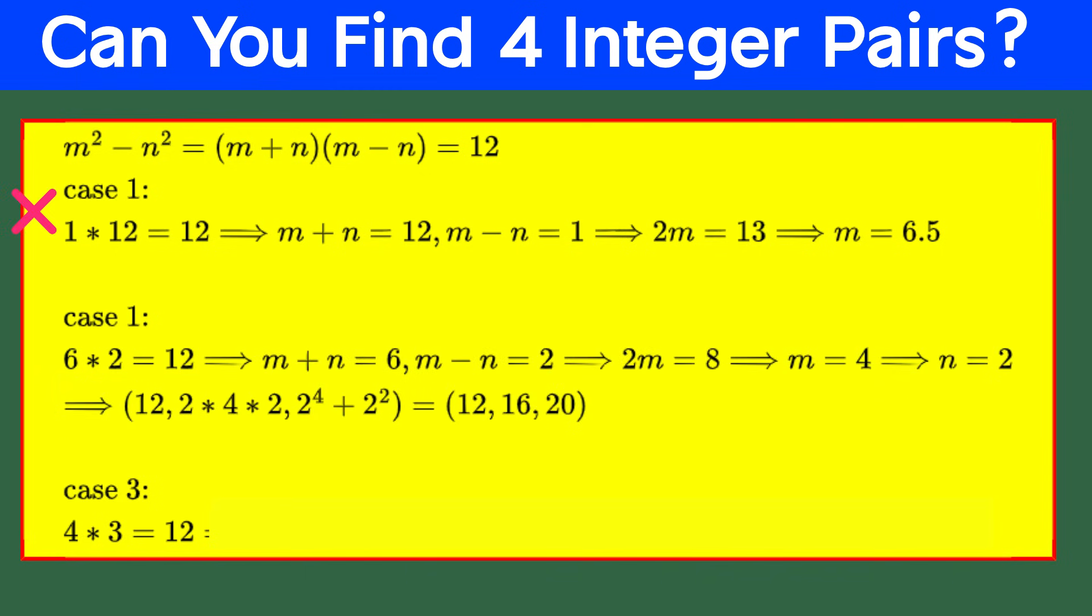Case 2. If m plus n equals 6 and m minus n equals 2, adding these gives us 2m equals 8, so m equals 8 divided by 2, which is 4, and then n equals 2. This gives us the triple 12, 16, and 20, so y equals 20 and x equals 16. This is a valid solution. But we already found this solution.